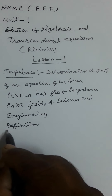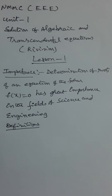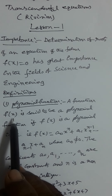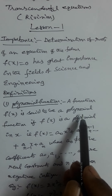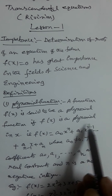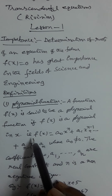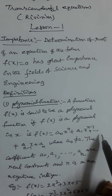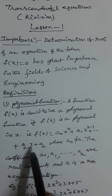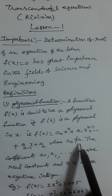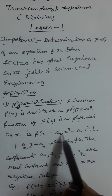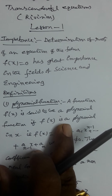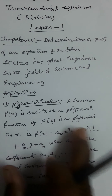Some important definitions. A function f(x) is said to be a polynomial function if f(x) is a polynomial in x. That is, f(x) = a₀xⁿ + a₁xⁿ⁻¹ + ... + aₙ₋₁x + aₙ, where a₀ ≠ 0. When a₀ = 0, the xⁿ term has coefficient 0, so there is no xⁿ term, and the degree of the polynomial automatically becomes n−1.